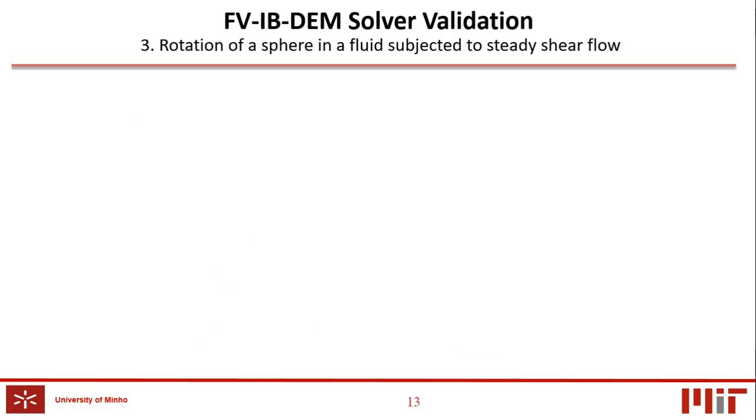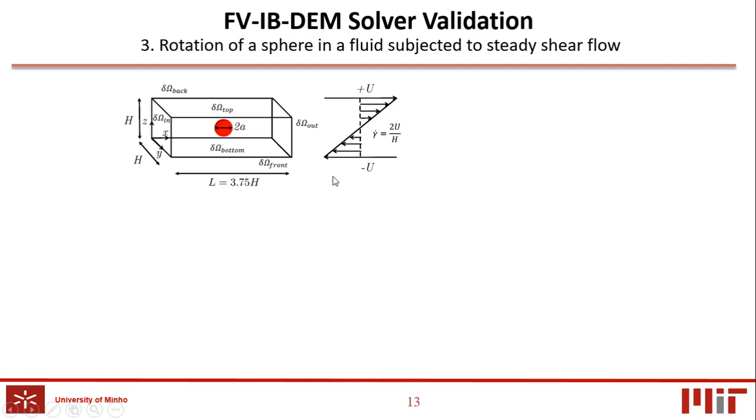The third case study used to validate the viscoelastic immersed boundary algorithm was the dynamic of a single sphere under steady shear flow. For a Newtonian fluid, Einstein showed that the rotation rate of the particle at steady state is half of the shear rate imposed on the system.